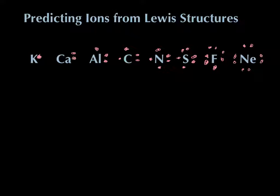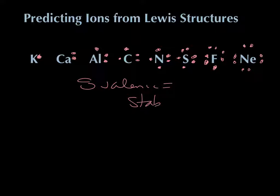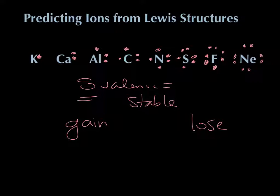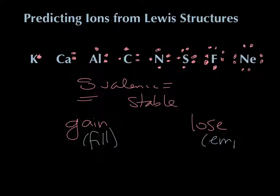We can use these to figure out what kinds of ions they form. The key is the rule of eight — every atom wants to have eight valence electrons, because eight is stable. Electrons are either going to be gained or lost depending on what's easier. If an atom has a relatively small number of electrons like one or two, it's easier to lose them and drop to an empty valence shell. If it has a lot of electrons like the ones on the right, it's easier to gain a few to fill up.